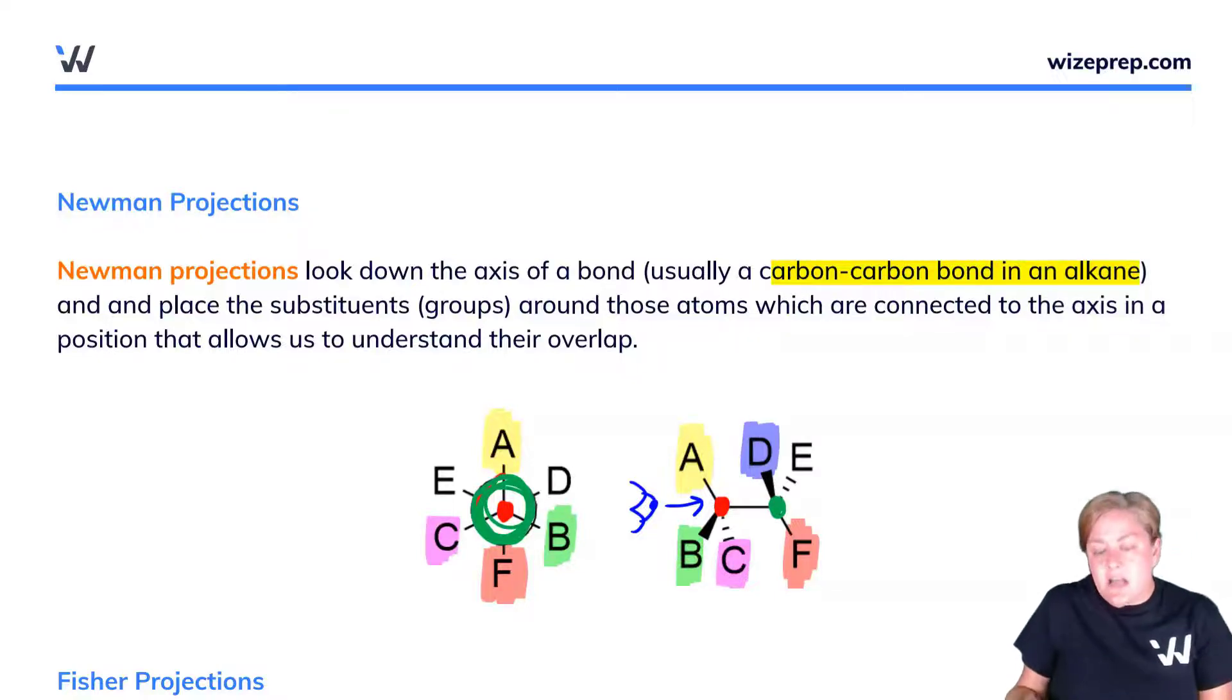I then take a look at group D—group D is out of the page and therefore on my right-hand side. You'll notice it's over there with group B, which was also the wedge. Last but not least, group E is behind the page and on my left. I will draw your attention to the fact that we have 60-degree angles between the groups in the front and the back. For now, it's enough to be able to convert this line wedge-dash formula into a Newman projection.